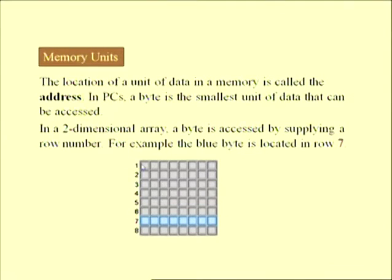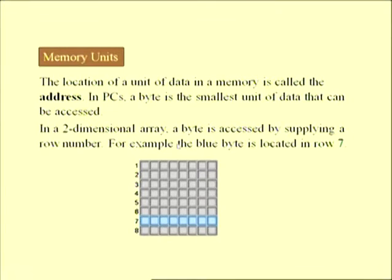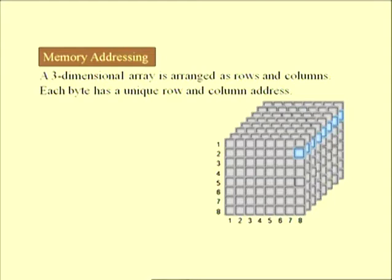If we place 8 bytes together, we get an 8-byte memory block. This arrangement creates an array of memory bytes — from the first byte to the eighth byte. In this block, how many memory bits are there? The answer is 8 times 8, which is 64 bits, and there are 8 bytes.